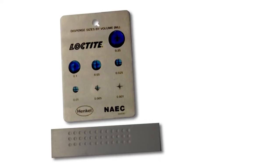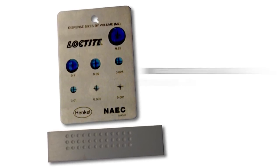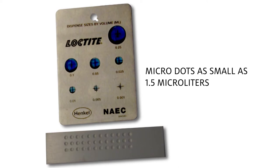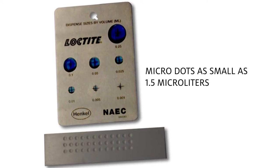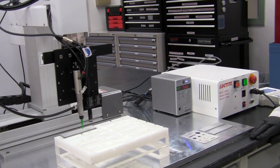The VA20 Precision Volumetric Dispense Valve features the capability of dispensing micro dots as small as 1.5 microliters at a very high cycle rate up to 180 cycles per minute or 3 cycles per second.